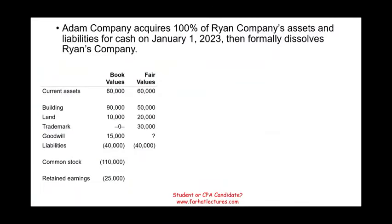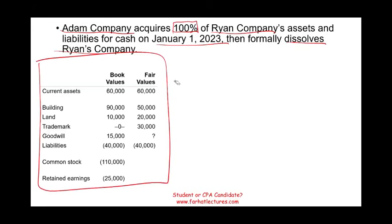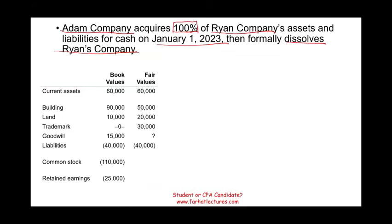Let's take a look at this exercise that's going to illustrate the concept of goodwill. Adam Company acquires 100% of Ryan Company's assets and liabilities. We're keeping everything simple — we're acquiring 100%, so we don't have to worry about minority interest or non-controlling interest. That happened on January 1st, 2023. Then Adam dissolves Ryan's company. Here we have Ryan's company book value and Ryan's company fair value, and we're going to learn how to create goodwill and how to book goodwill after we purchase the company.